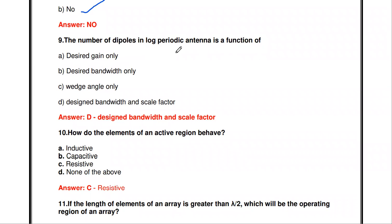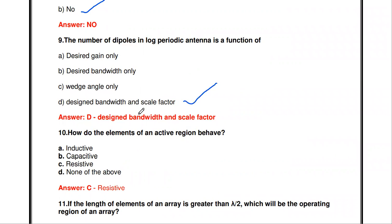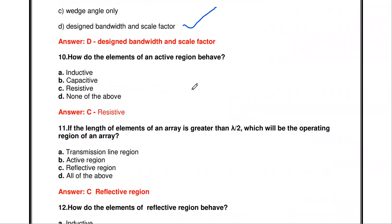The next question: the number of dipoles in a log periodic antenna is a function of what? The options are desired gain, desired bandwidth, wedge angle, or designed bandwidth and scale factor. The answer is designed bandwidth and scale factor.